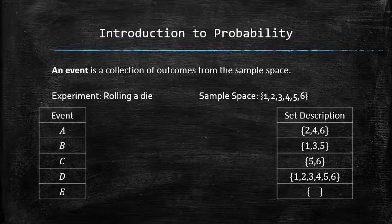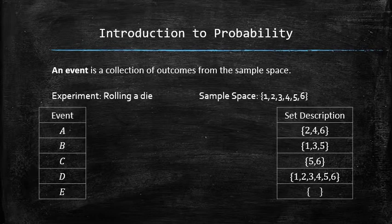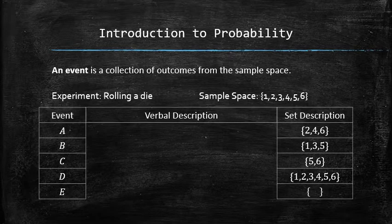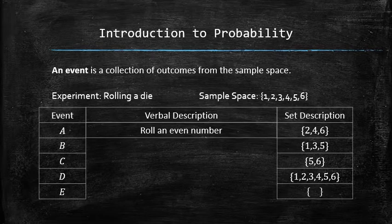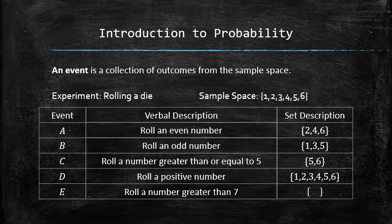In probability, we use the capital letters from the beginning of the alphabet to denote the events. In this case, we denote the event A as the collection of outcomes two, four, and six and so on. Some events may have a nice verbal description in English. Which of the listed events can be verbally described as rolling an even number? Naturally, we would say that the list two, four, and six matches that description. Similarly, we can label the other events in the following way.